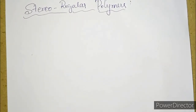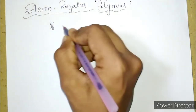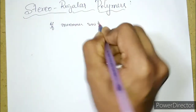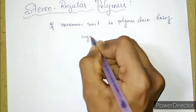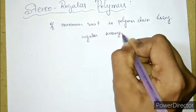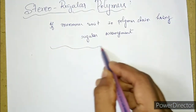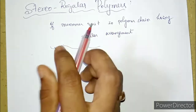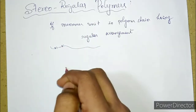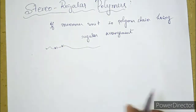Hello students, welcome to my channel. In this video we will study stereo regular polymers. In polymers, if you have a regular arrangement of the monomer units in the polymer chain having regular arrangement, we call it stereo regular polymers. If the monomer units are having some specific arrangement or specific configuration in the polymer chain, we call such a polymer a stereo regular polymer.